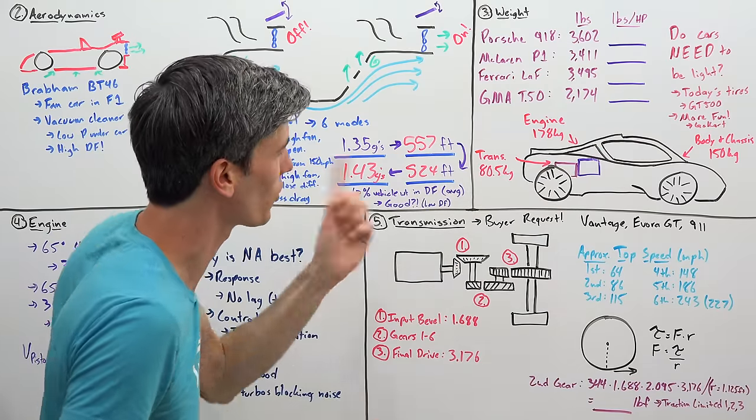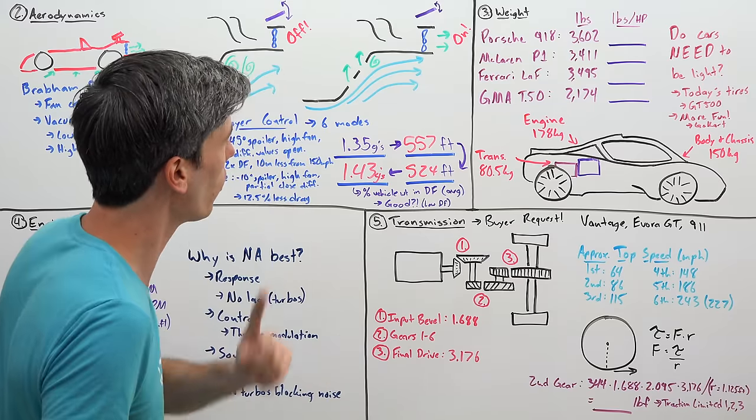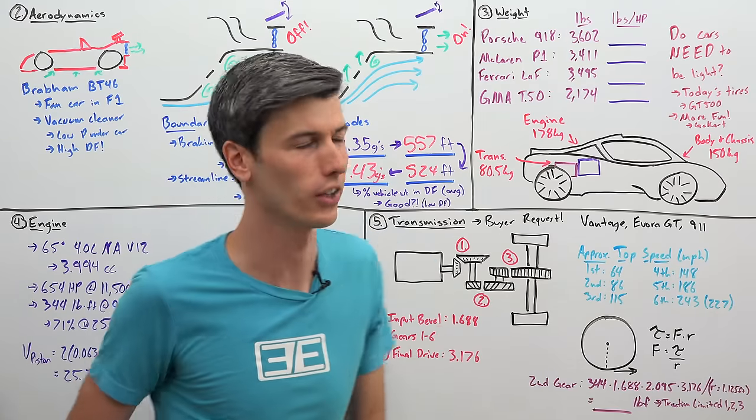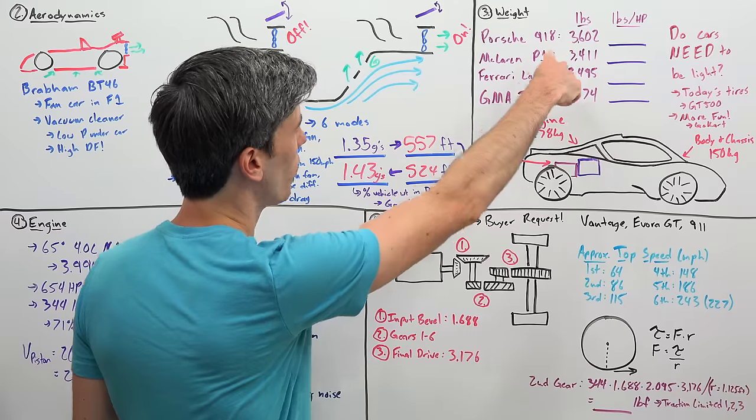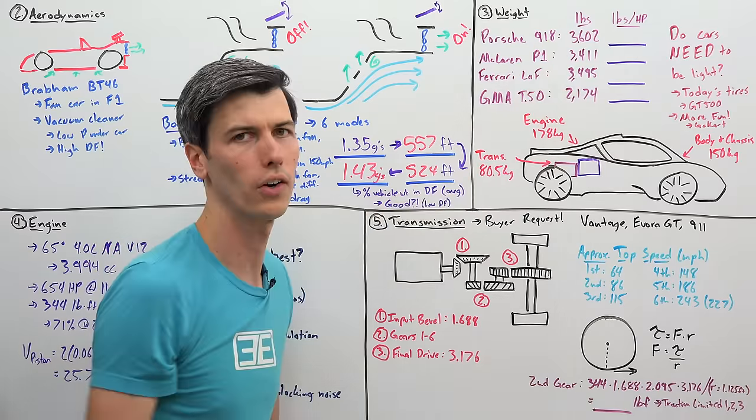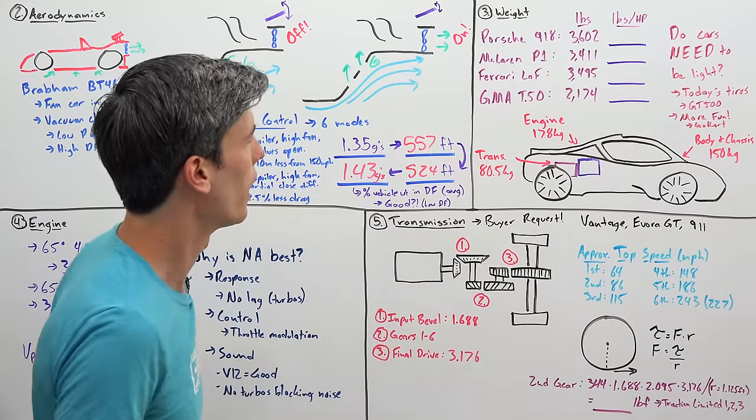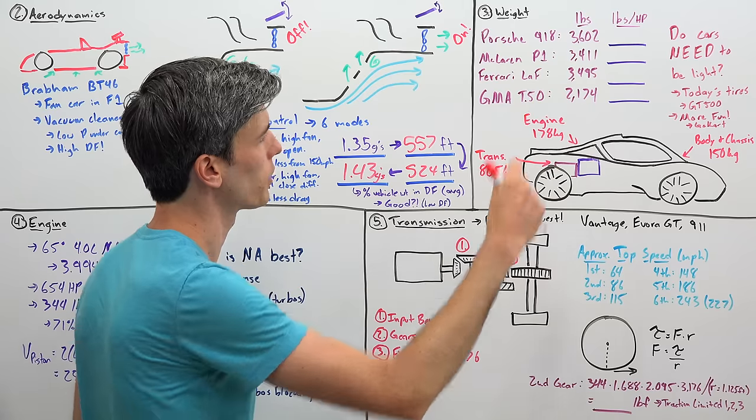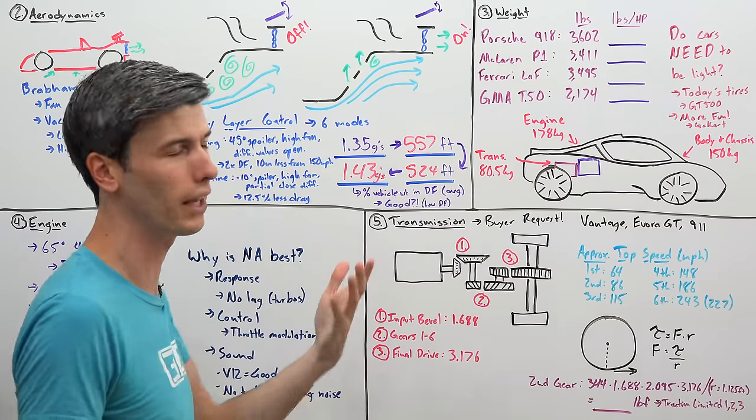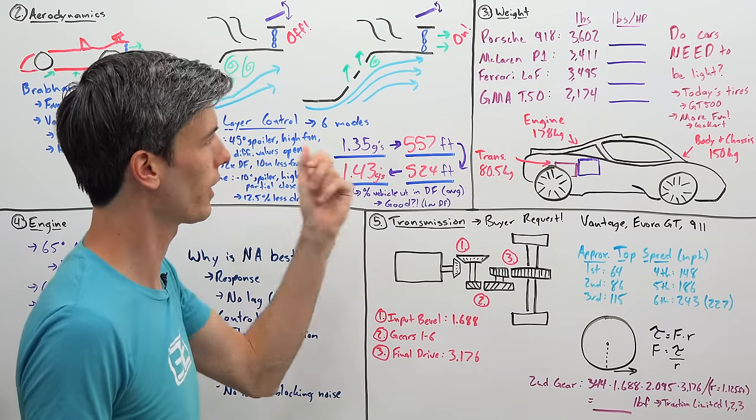And the thing is, there's a quote Gordon Murray said, which I really enjoyed. He said, if the car is light, you don't need a big engine. So, you're probably looking at these cars and saying, but yeah, Jason, all of these cars have like 900 horsepower. So, that's why they're heavy, they've got so much power. And it's like, yeah, part of it is, but they don't need to have that much power if they were lighter.